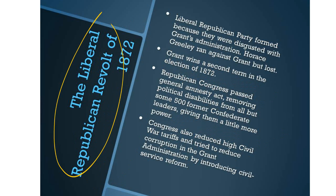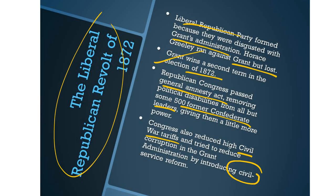The Liberal Republican Revolt of 1872 caused the Liberal Republican Party to form, because they were disgusted with Grant's administration and all the corruption in politics. Horace Greeley was the candidate who ran against Grant but lost, so Grant won a second term in the election of 1872. The Republican Congress passed the General Amnesty Act, removing political disabilities from all but some 500 former Confederate leaders. Congress also reduced high Civil War tariffs and tried to reduce corruption by introducing civil service reform.